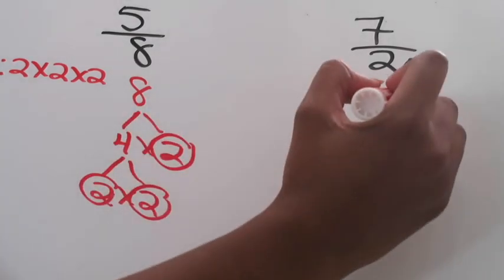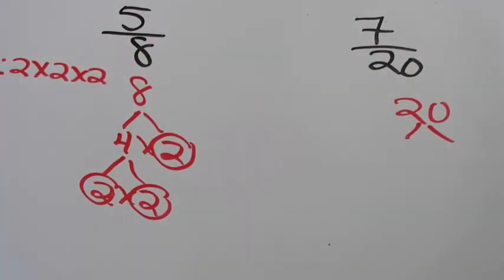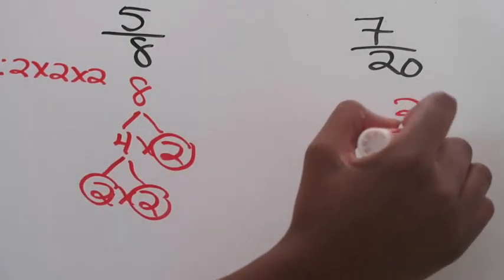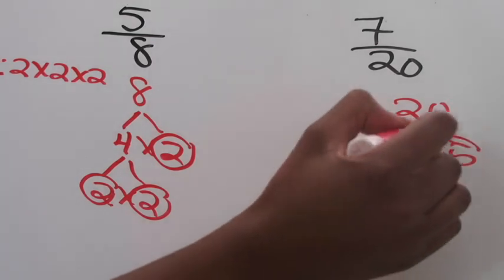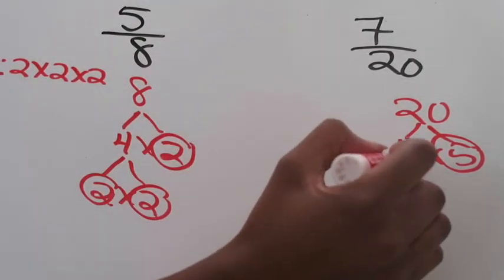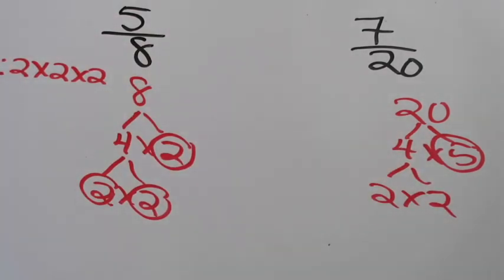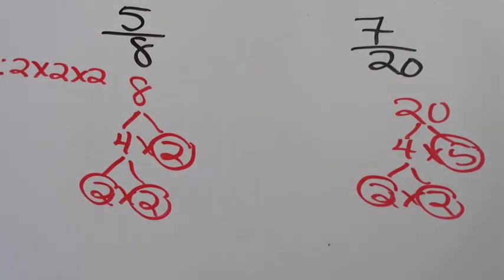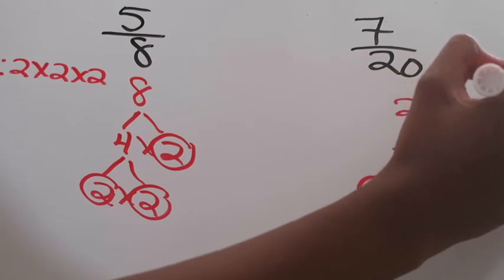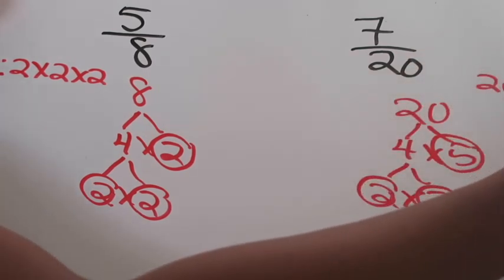Now I'm going to prime factor 20. I'm going to use the factors 4 times 5. I know that 5 is prime, so I'll circle that. I'm going to continue to prime factor 4 — that is 2 times 2, and 2 is prime, so I'll circle those. My prime factors for 20 written as a product of its prime factors would be 2 × 2 × 5.